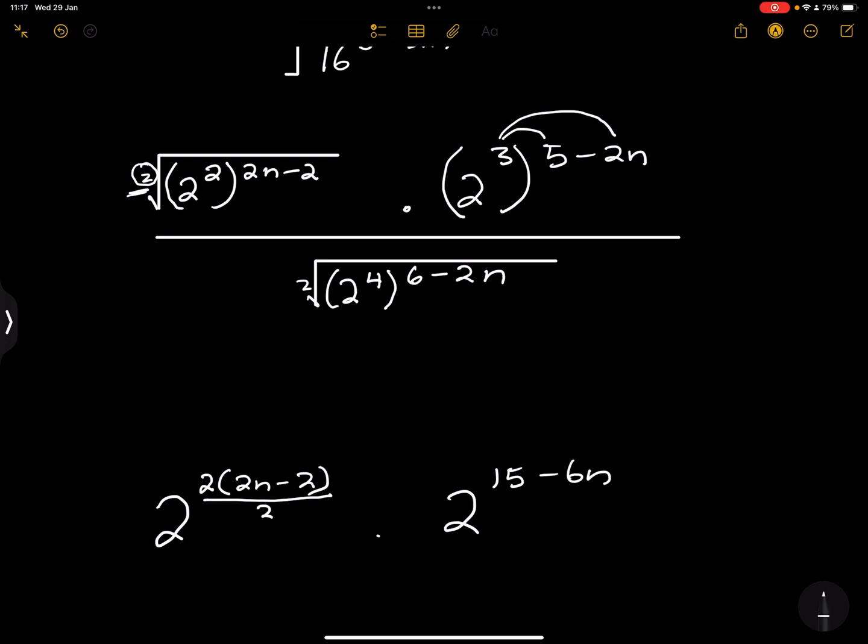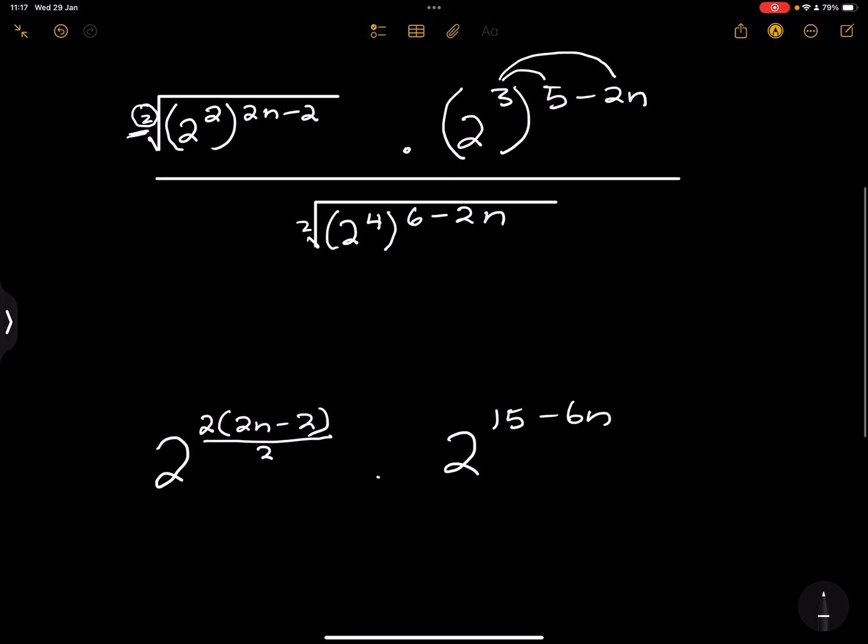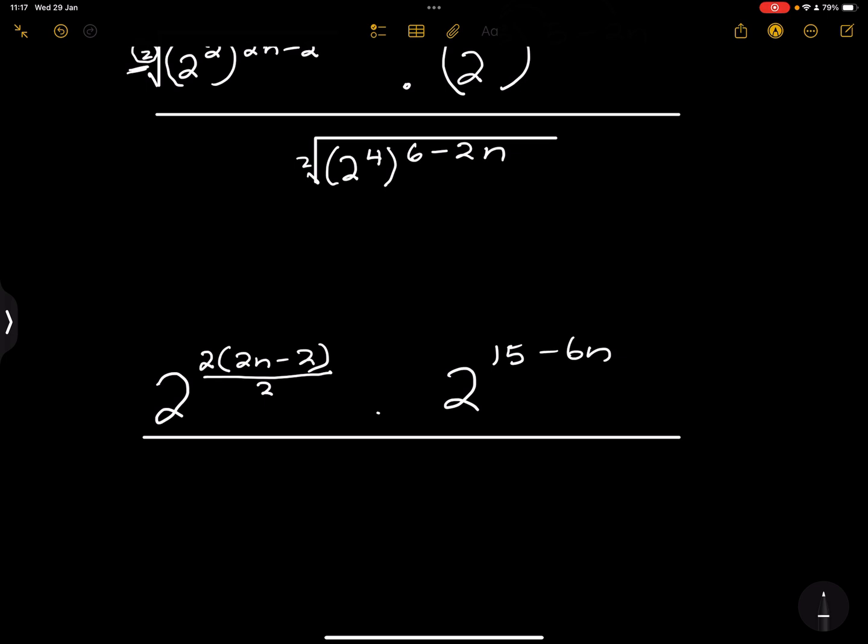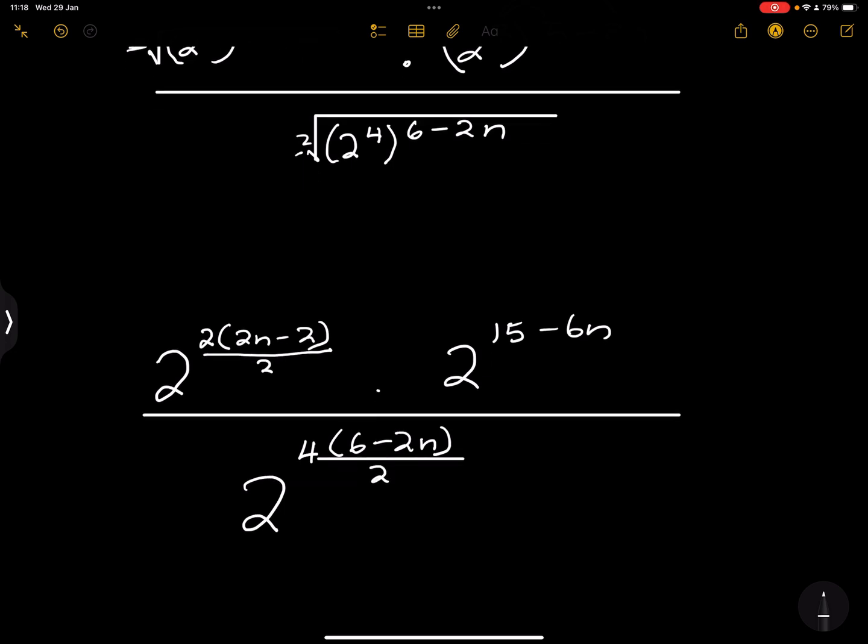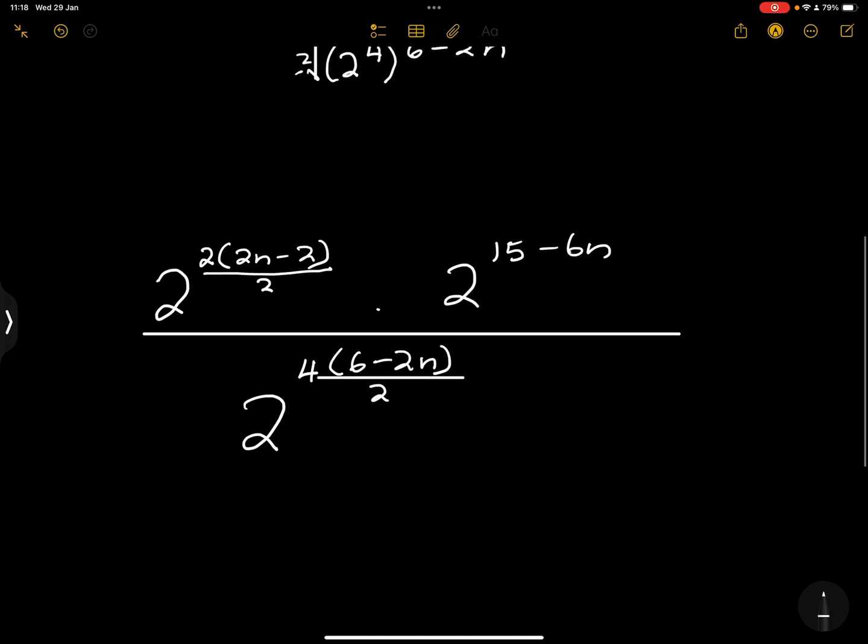This divided by, again we're going to apply the very same rule. So we're going to say 2 into 4 times 6 minus 2n. Let me write the 2 big enough. And we are dividing this by the root, and that becomes the denominator in our exponent.